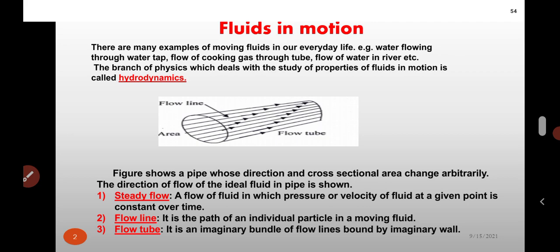Next one is flow tube. It is an imaginary bundle of flow lines bound by imaginary wall.